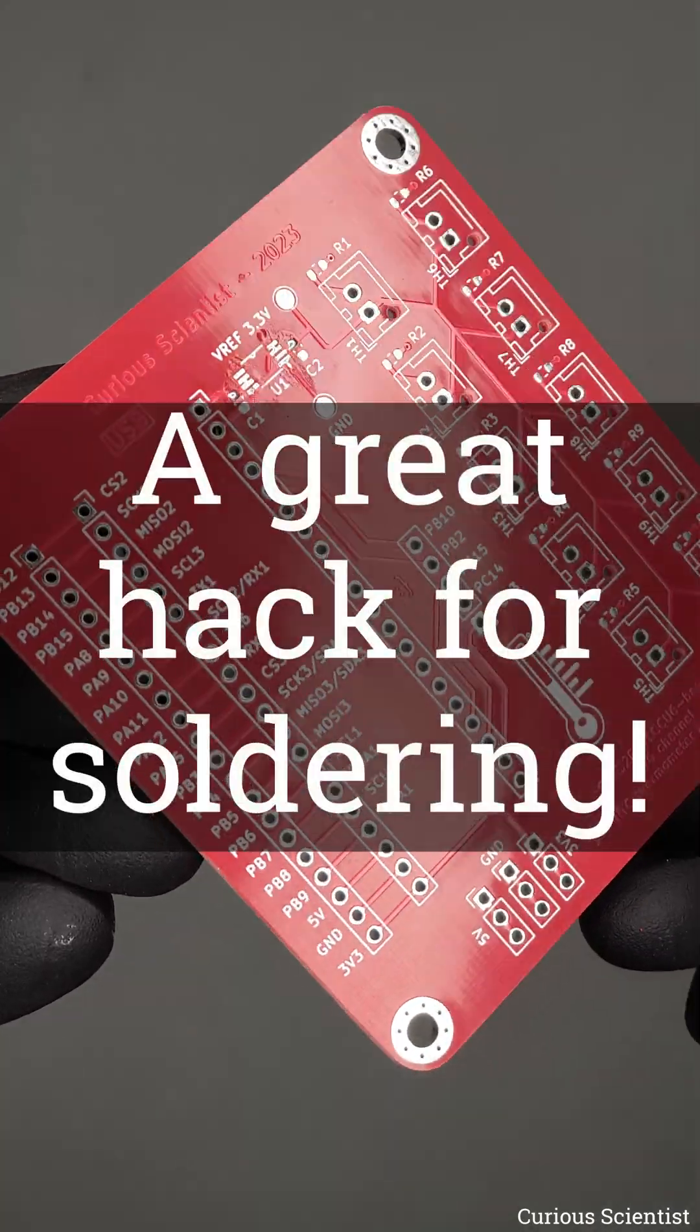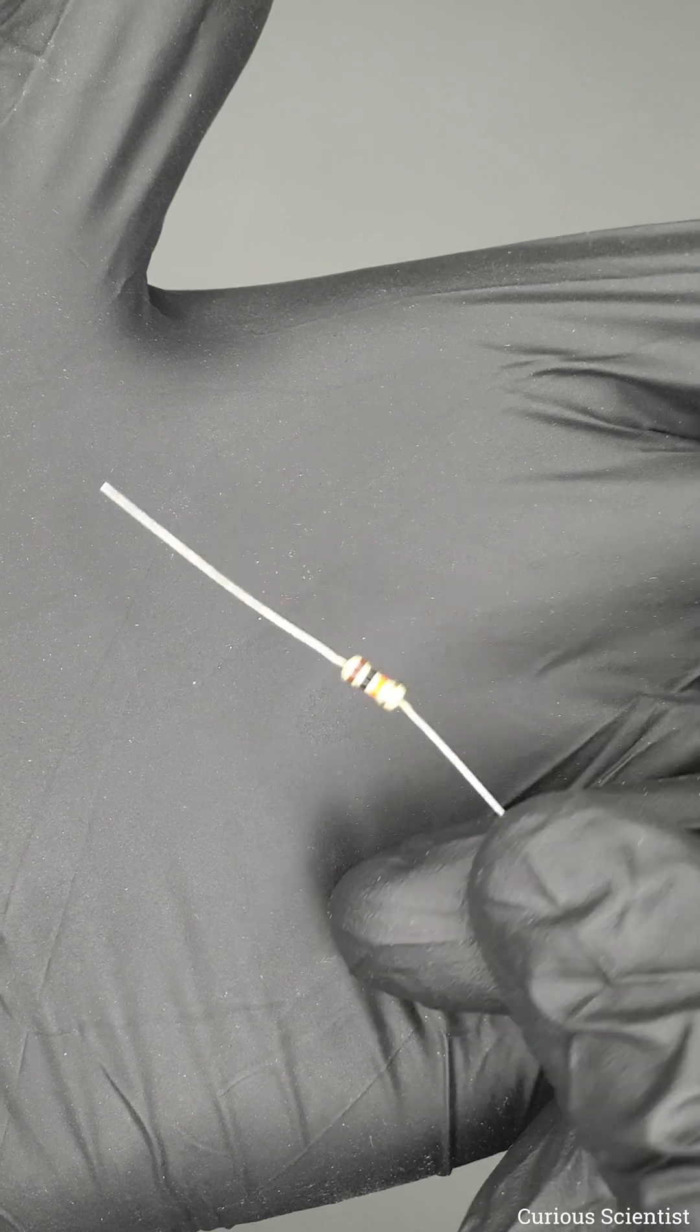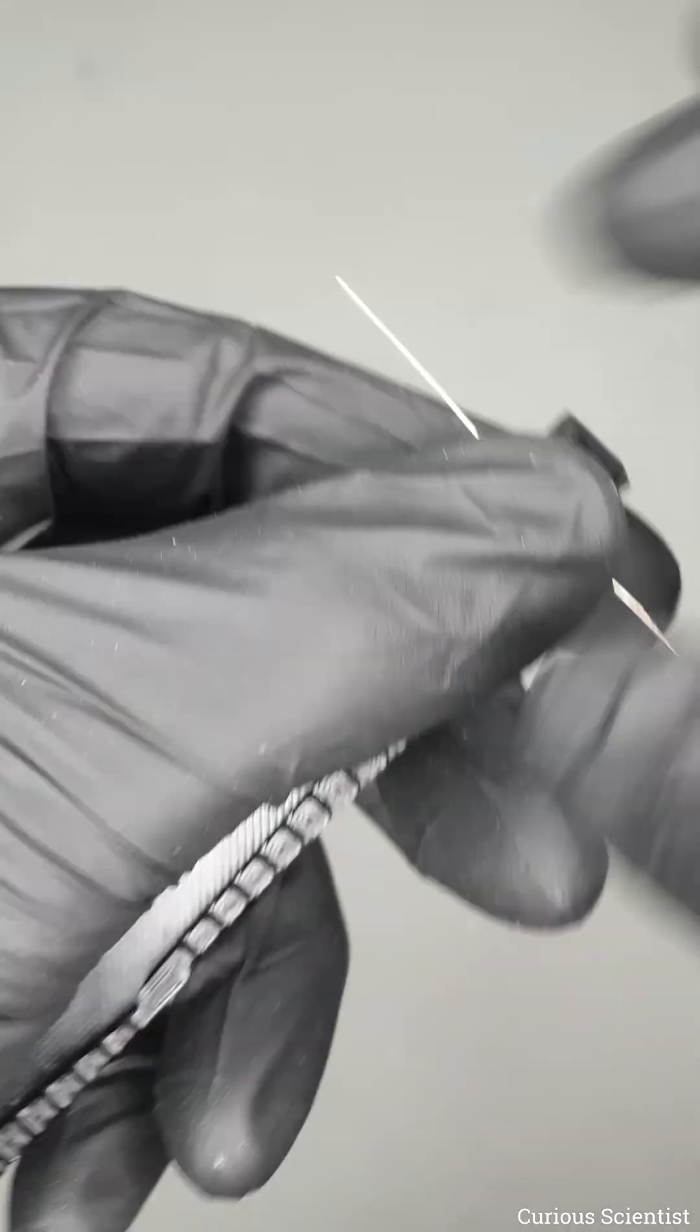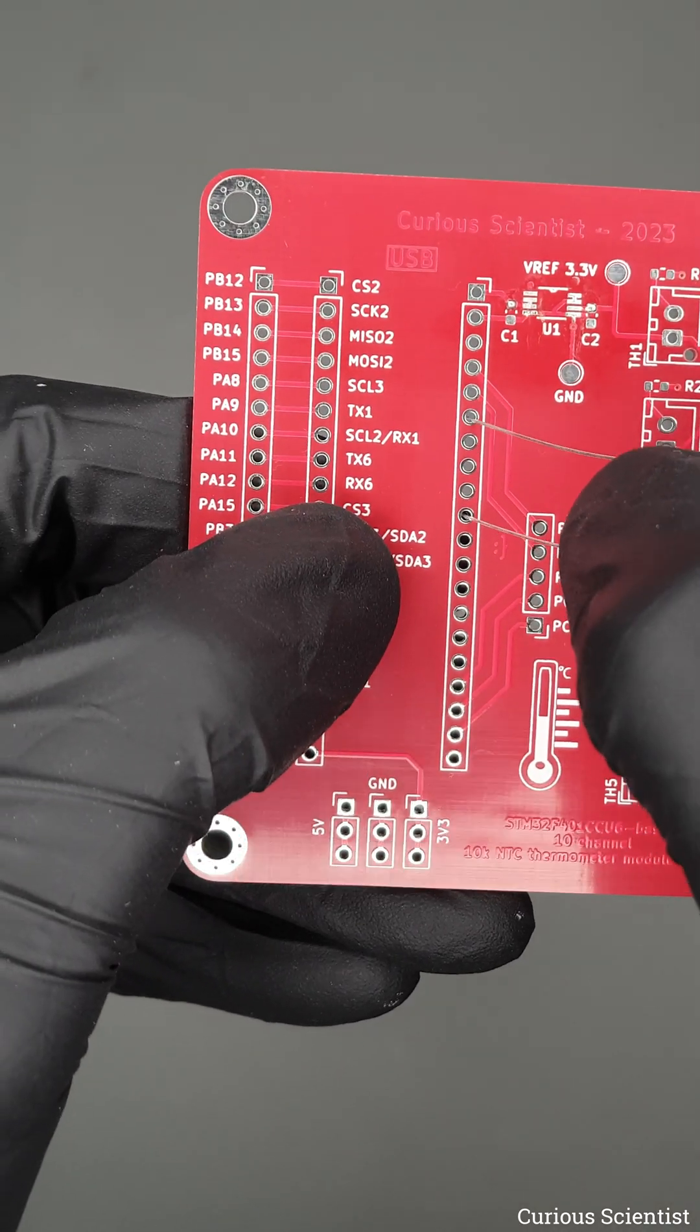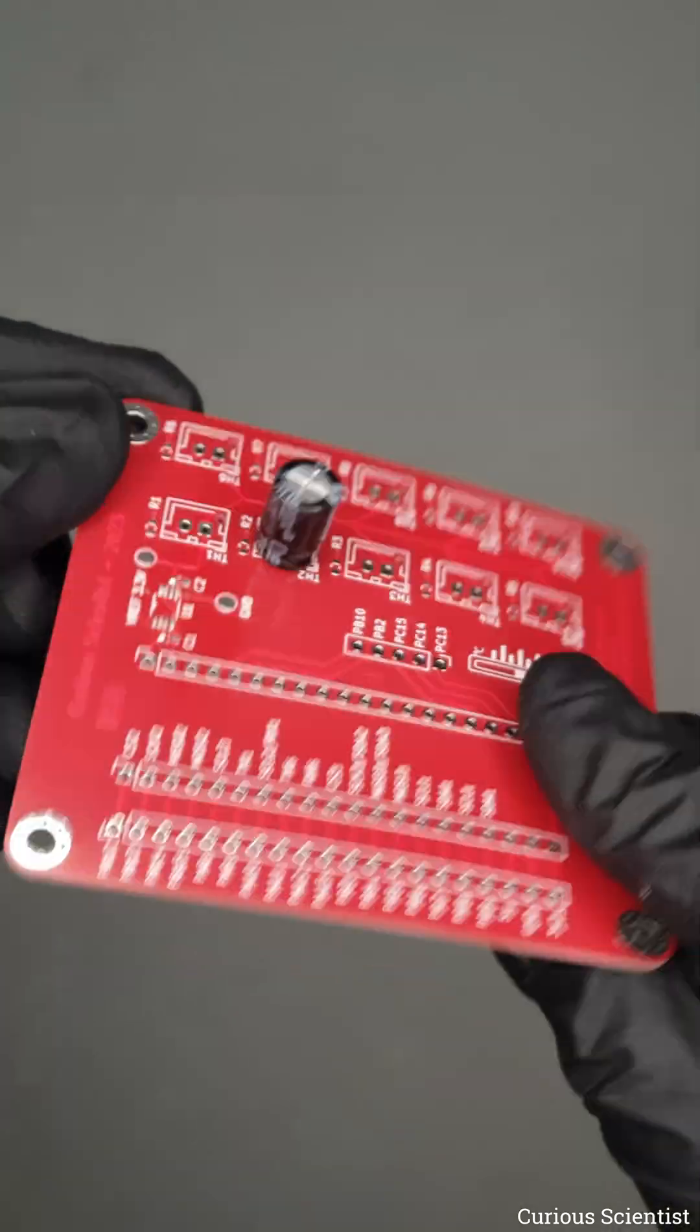In this video I'm going to show you a trick for soldering through-hole components. If you have a resistor or a capacitor, you can simply bend their legs and then place them in the circuit board to their corresponding place, and they will stay there when you flip the board and you can solder them.